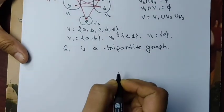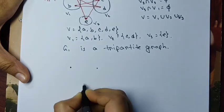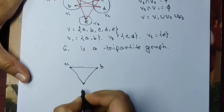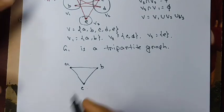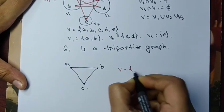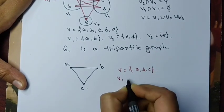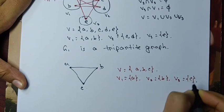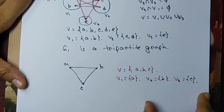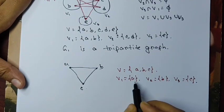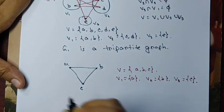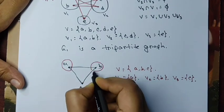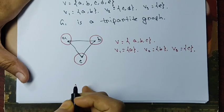Now let's check another easy example: a triangle with vertices a, b, and c. We can take the partition V1 = {a}, V2 = {b}, V3 = {c}. Since it is a simple graph with no loops, there is no option for a vertex to be adjacent to itself, so no two vertices within any single part are adjacent. Therefore this triangle is also a tripartite graph.